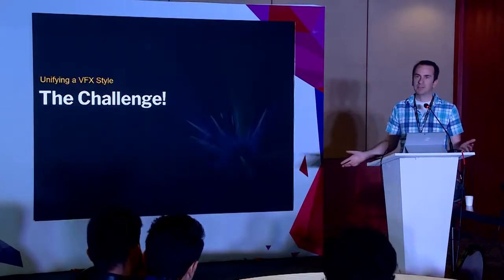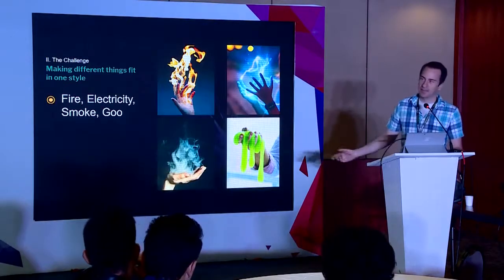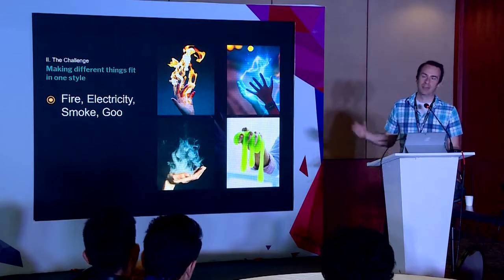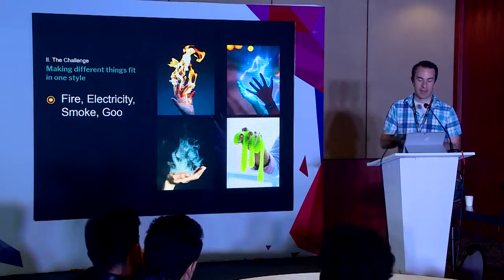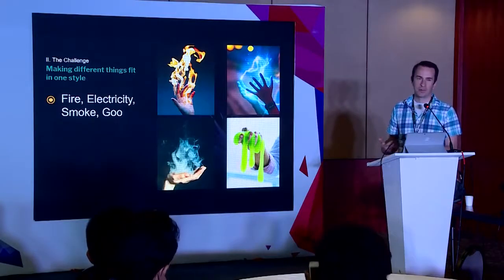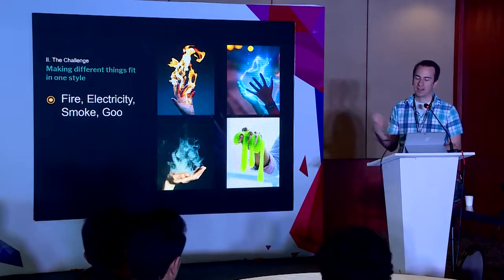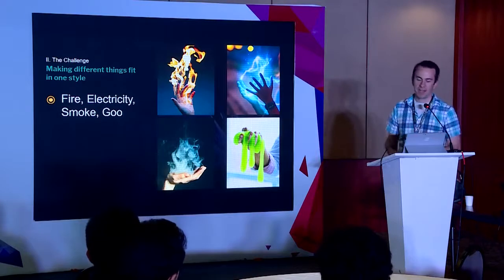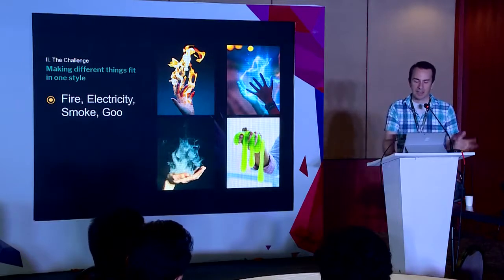In putting this whole thing together, I had a challenge: how do I get these four things — fire, electricity, smoke, and goo — to match and look correct next to each other in a game? This poses a lot of unique problems. They look cool individually, but they might look kind of weird when you start putting them next to each other in a video game. When a character is throwing slime, another is throwing fire, and another has electricity, it just looks like a mess when they're all happening on top of each other.